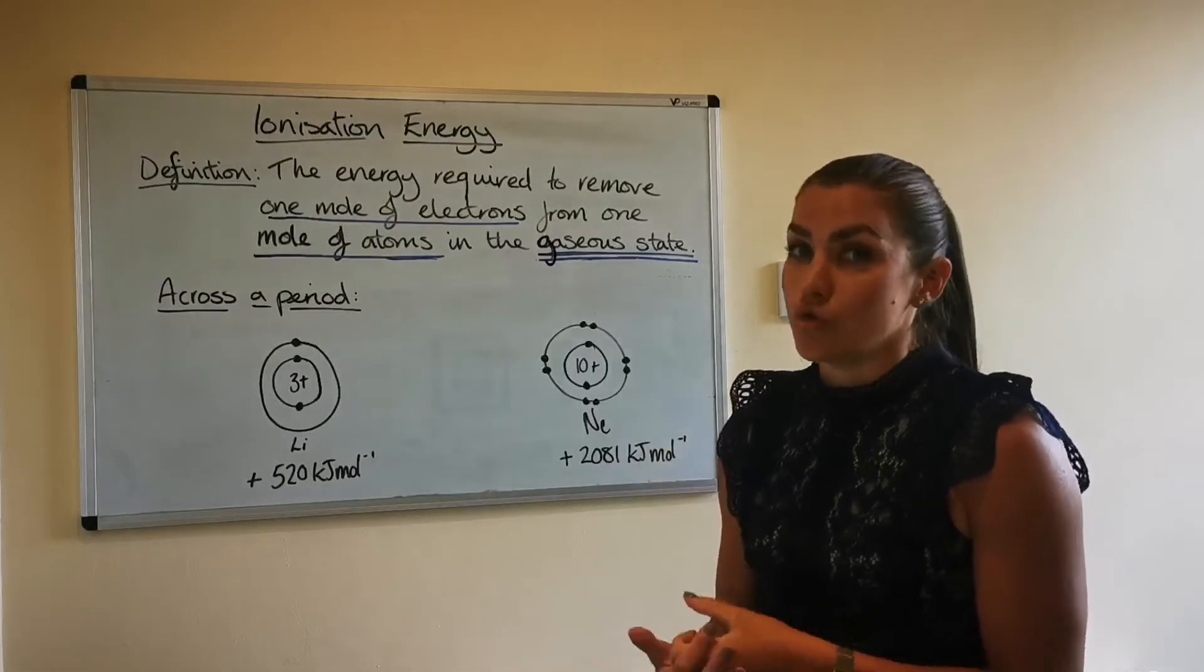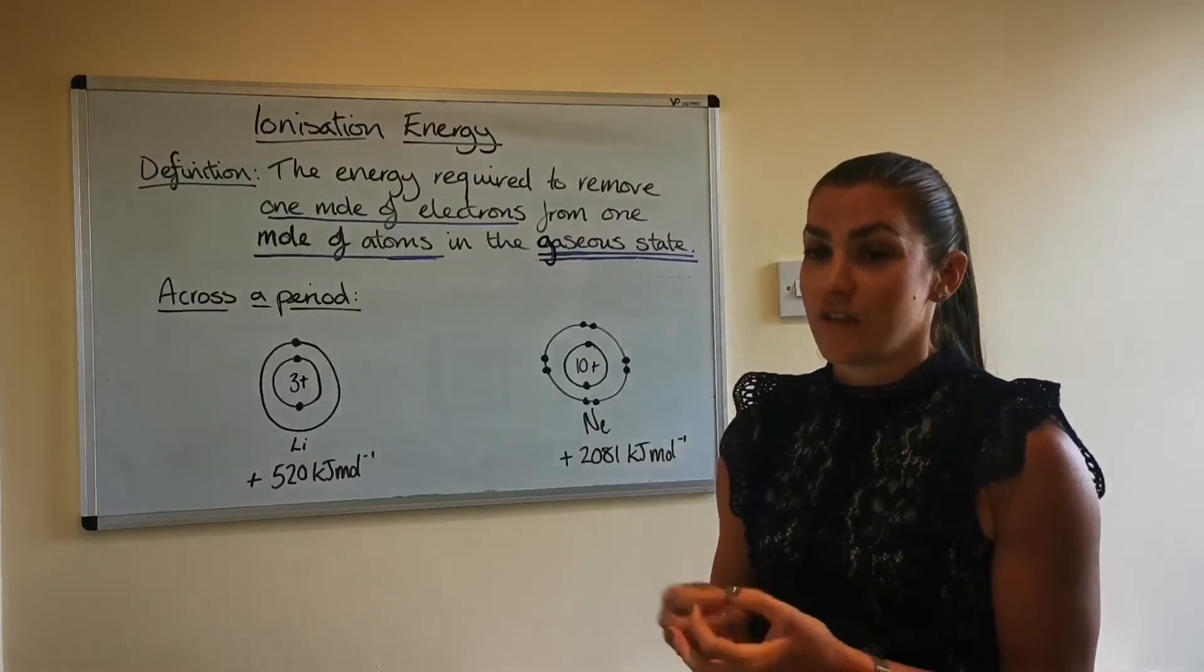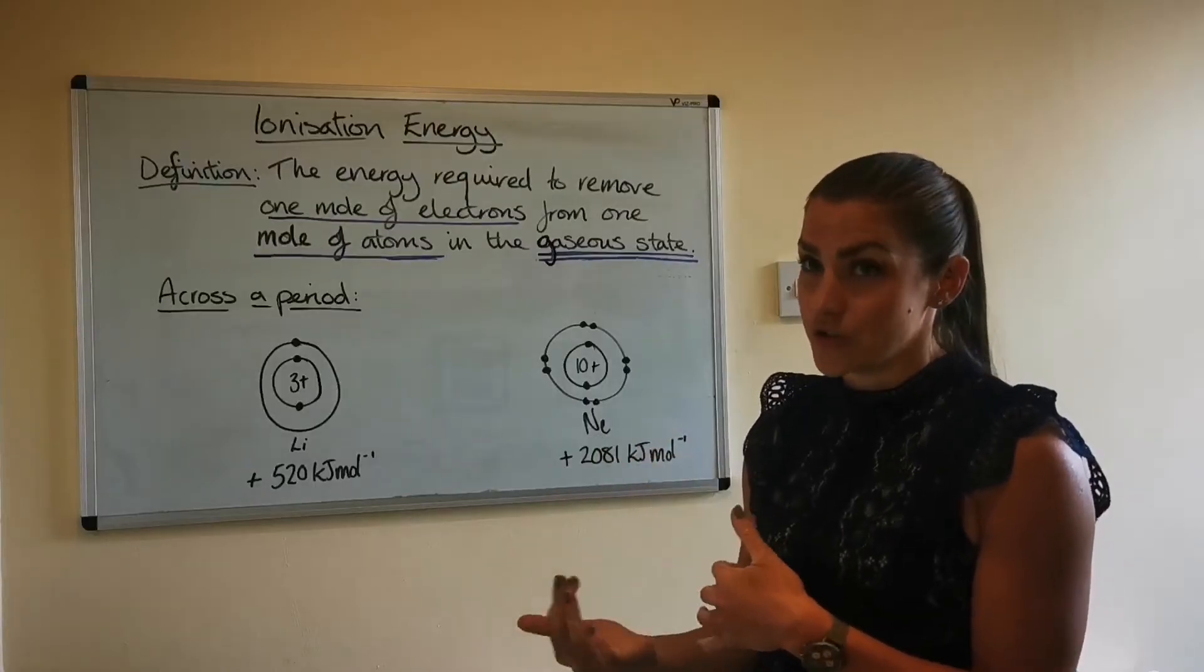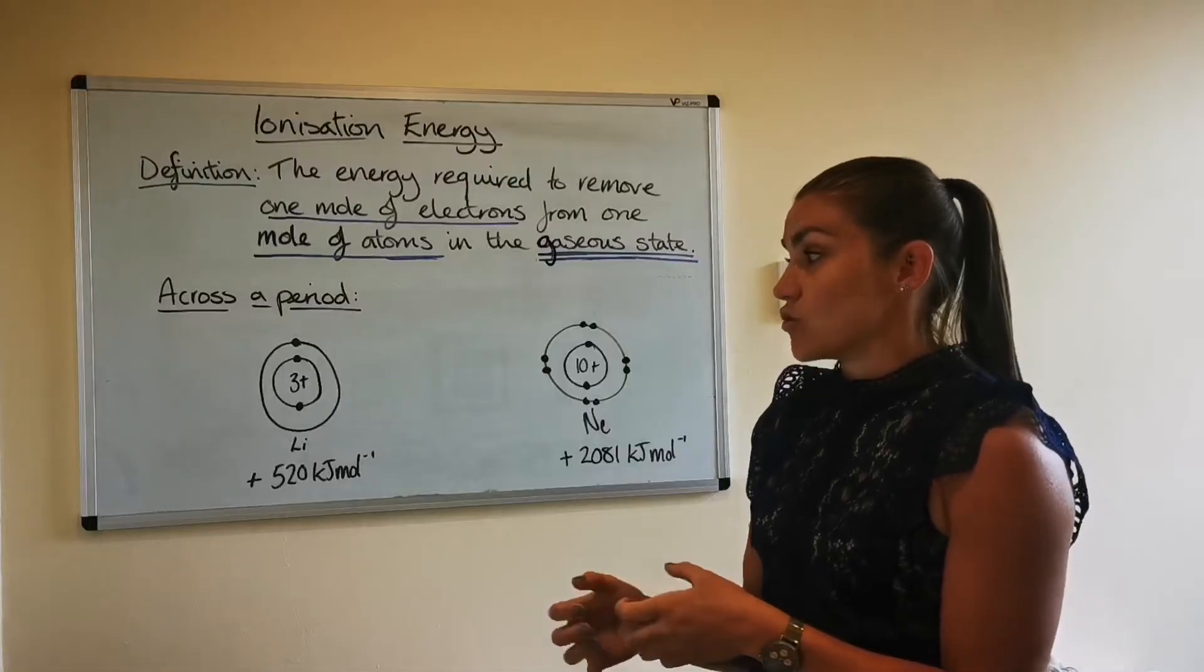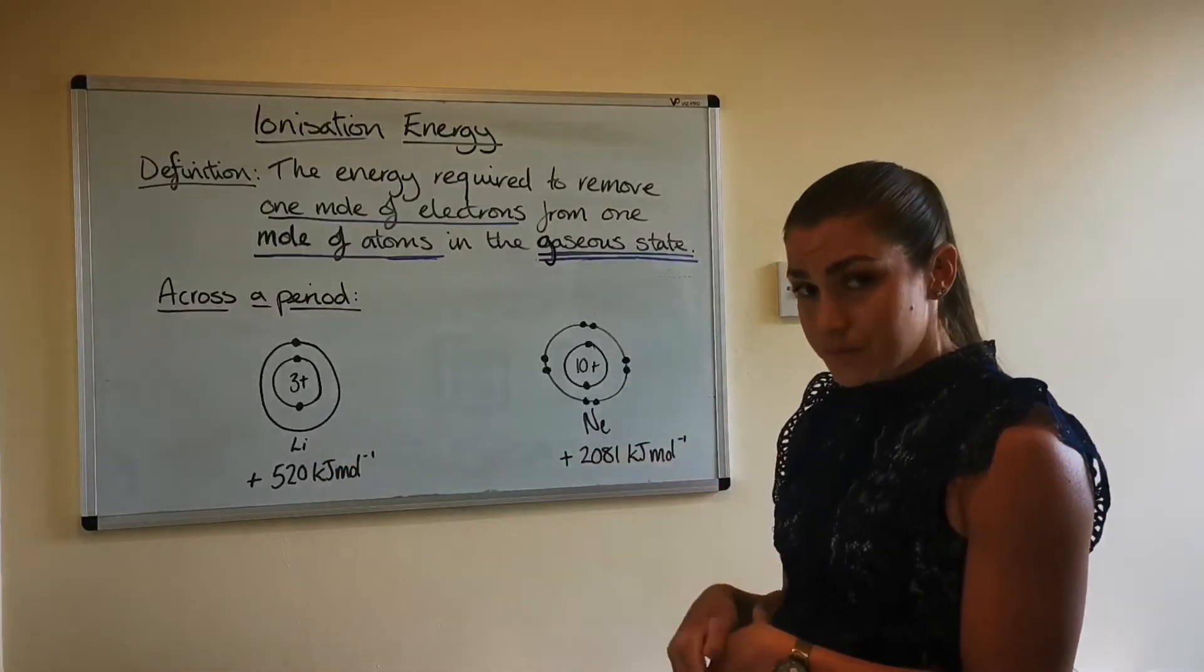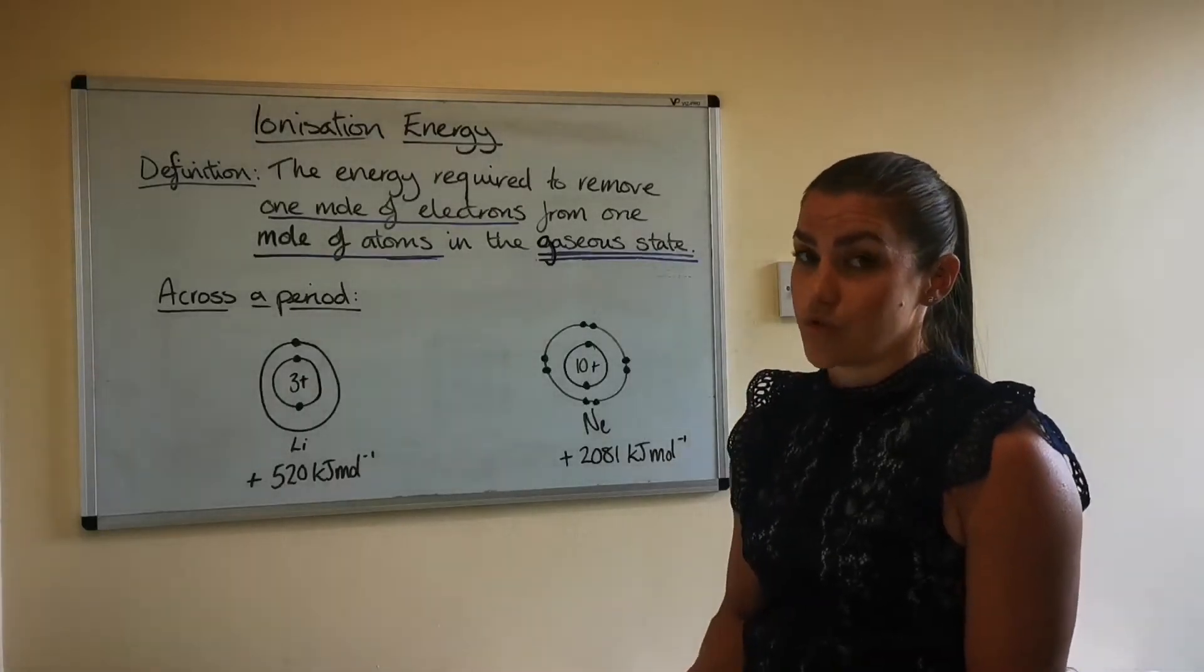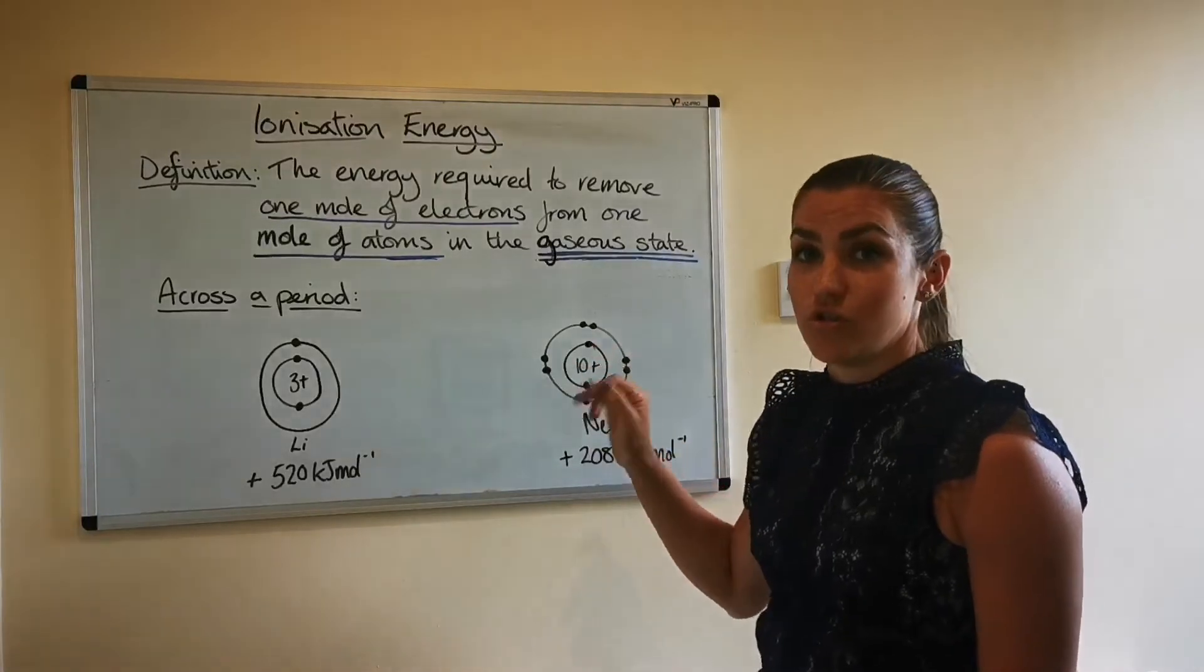Now, if you are trying to remove electrons, if you have a bigger nuclear charge, then that's a bigger attraction on the electrons. So it's going to be harder for you to remove them. Therefore, more energy is going to be required. So because as we go across the period, the nuclear charge increases, it becomes increasingly more difficult to remove moles of electrons because there's a greater attraction of the electrons to the nucleus.